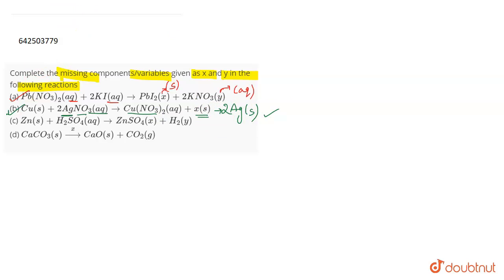Talking about the third one, it is Zn solid plus H2SO4 aqueous giving ZnSO4 plus H2 Y. If you talk about Y then H2 is a gas, so Y will be G. Talking about X, X will be an aqueous solution. So all these salt solutions are aqueous. So ZnSO4 is AQ.